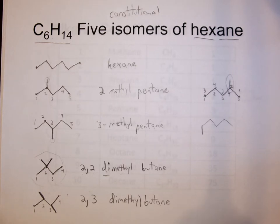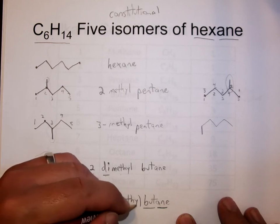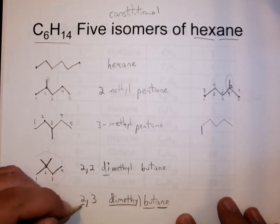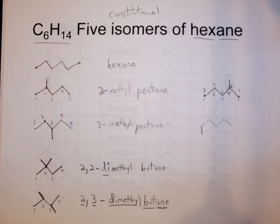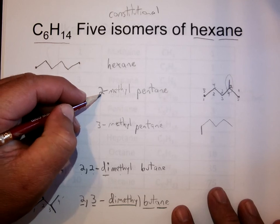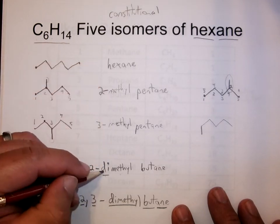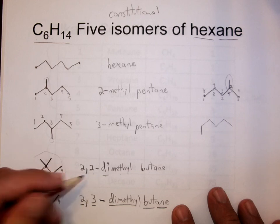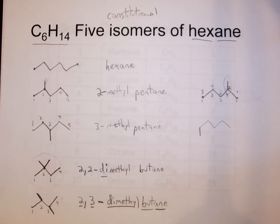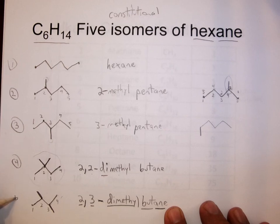The naming carries a lot of information: 'but' means four carbons, 'ane' means saturated hydrocarbon, 'dimethyl' means two methyl groups — one off the second carbon, one off the third carbon. On punctuation: whenever you have a number next to a letter in an organic name, put a dash to separate them — so 2-methyl, 3-methyl. When you have two numbers, separate them with a comma — so 2,2-dimethyl or 2,3-dimethyl. So there are five isomers of hexane.